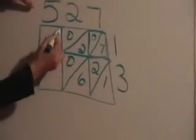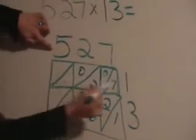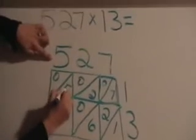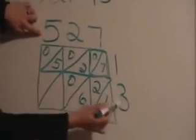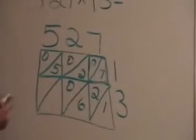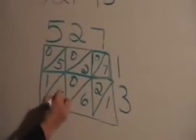Let's look at this box. We have 5 times 1 is 5, 0, 5. And we have 5 times 3, 15. 1, 5. The hard part is over.